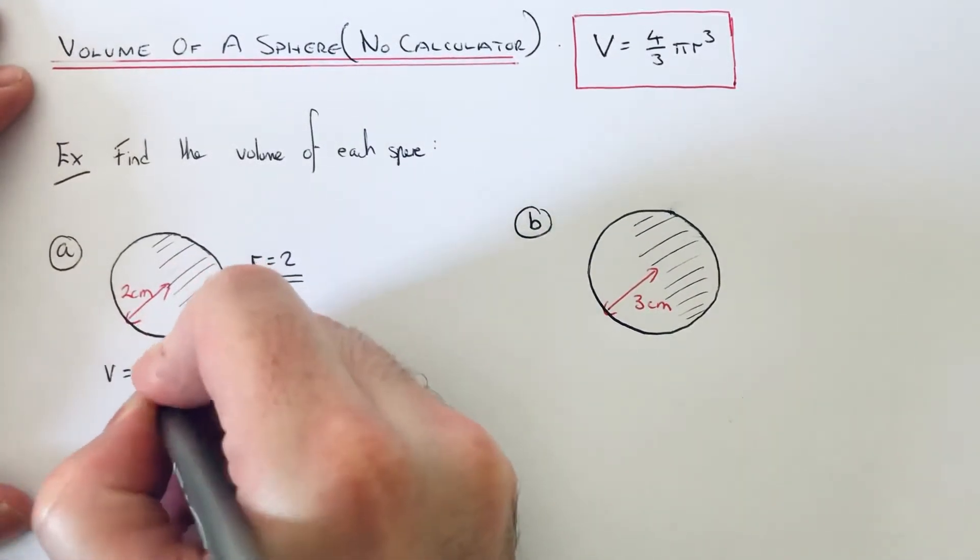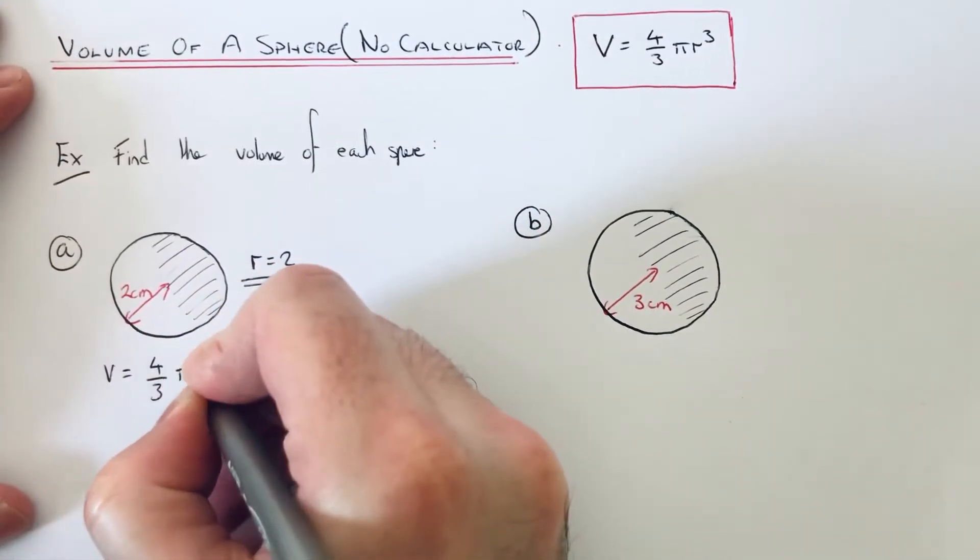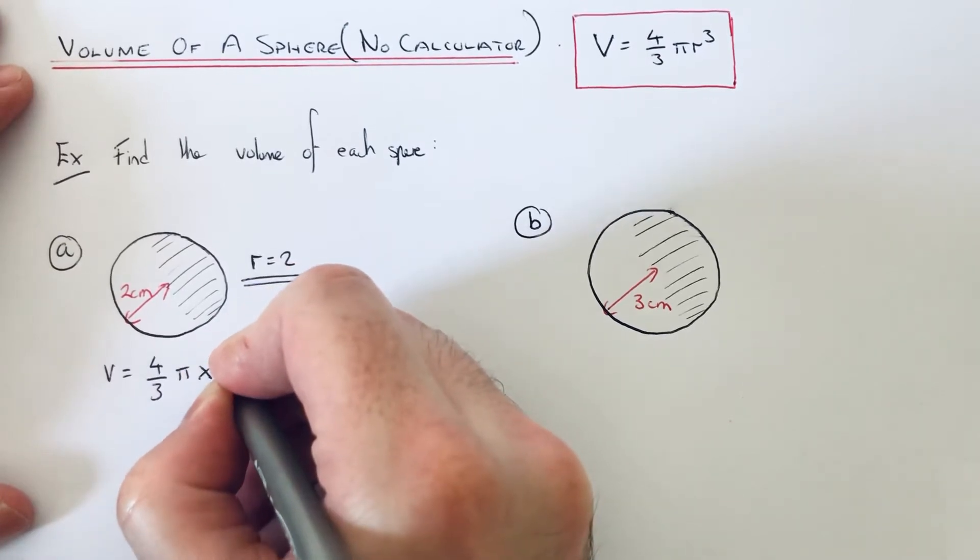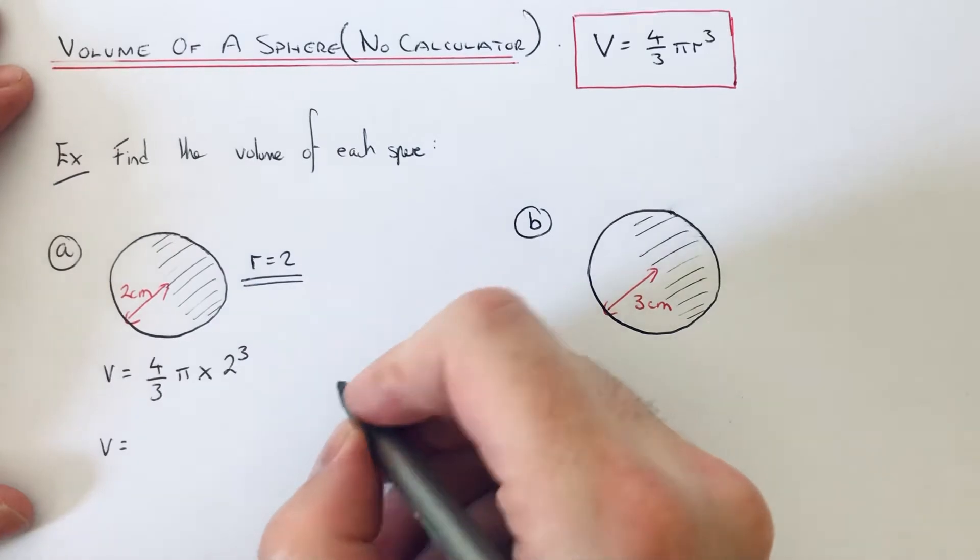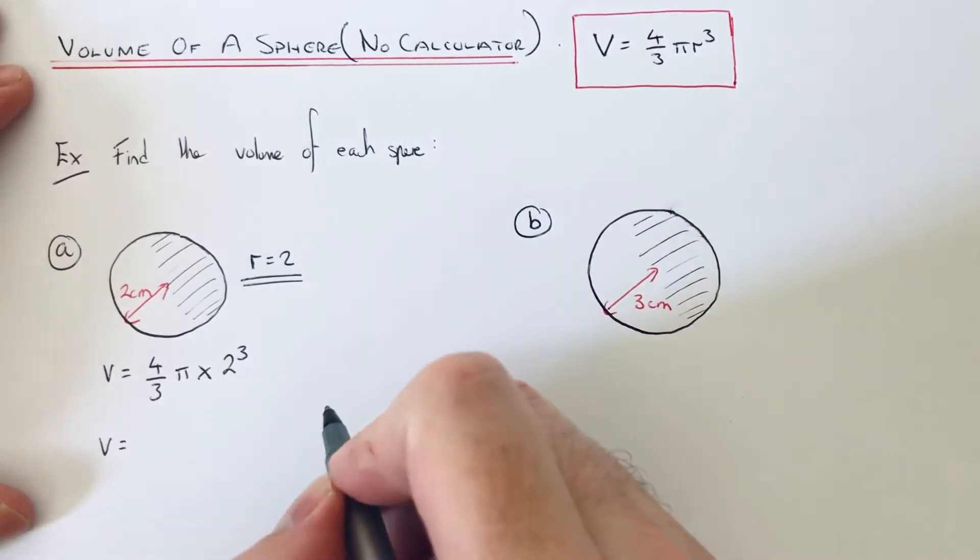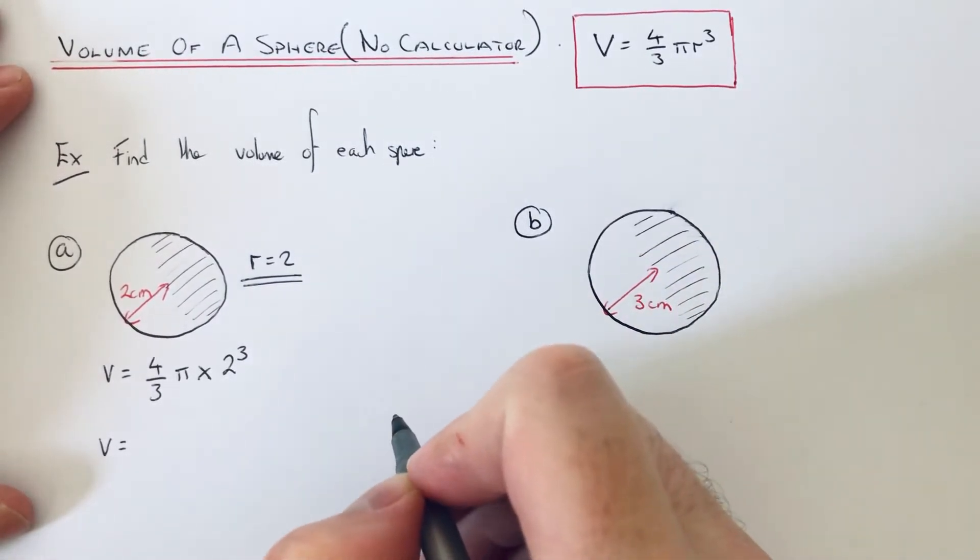It would be V = 4/3π × 2³. 2³ is 2 × 2 × 2, which is 8.